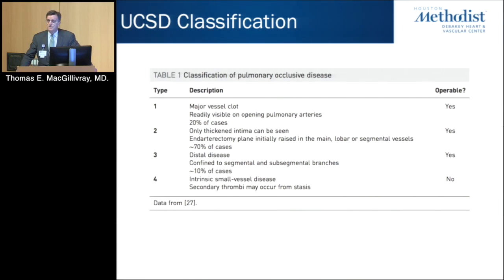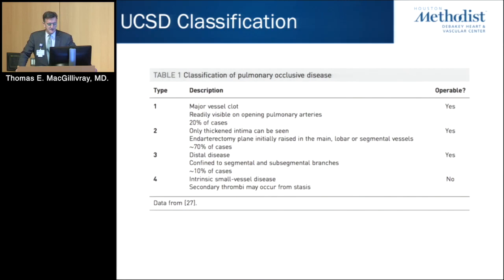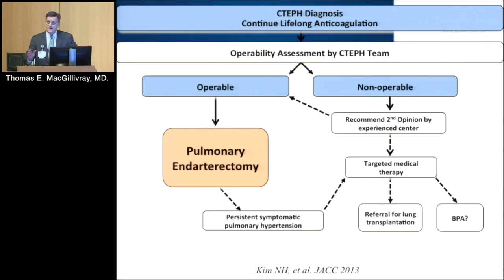There is a classification system that came from UCSD — the mothership, if you will — of the management of this disease. Type 1 are those with fresh clots that extend down into the main, lobar, and segmental arteries. Type 2, the plane starts in the lobar and into the segmental arteries. Type 3 disease starts at the level of the segmental arteries, and type 4 disease extends into the periphery. By conventional wisdom, type 4 disease is usually not considered surgically approachable, although some expert centers are tackling those patients.